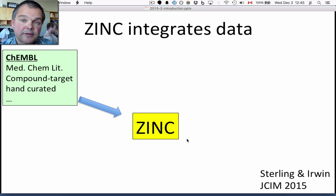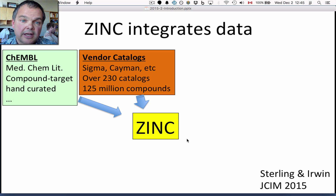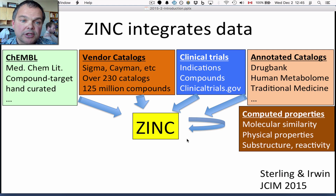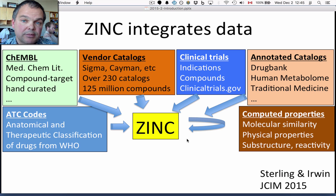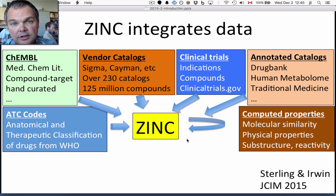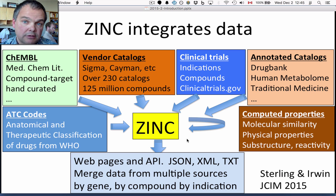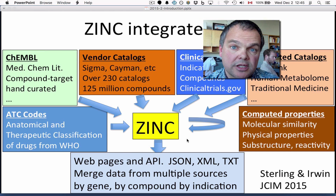Zinc integrates data from these different sources like ChEMBL, vendor catalogs, clinical trials, annotated catalogs, computed properties, and other data like anatomical and therapeutic classifications from the WHO. It integrates it into a relational database and makes it available to you via an easy-to-use interface — either web pages, an API — and you can get it in different forms, for example in Excel format, JSON, XML, TXT, and so on. It also makes tools that are easy to interrogate this data with.